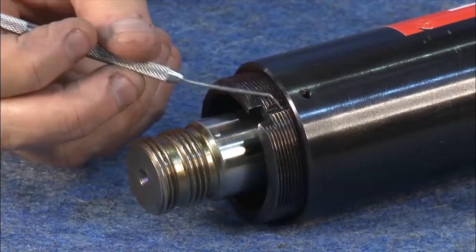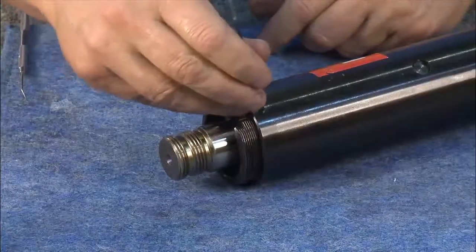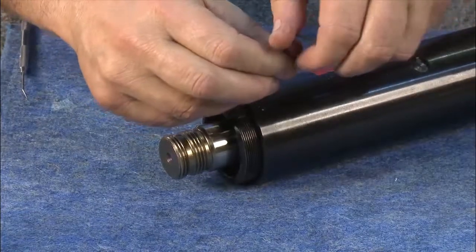Next, thread the front gland back out until it lines up with one of the grooves for the set screws. Then, tighten the set screw to lock the gland in position.